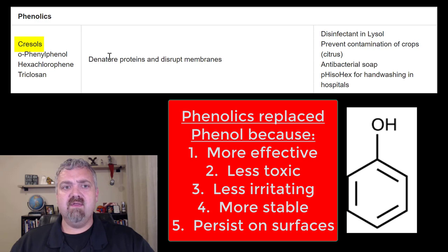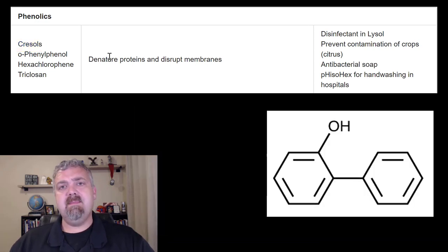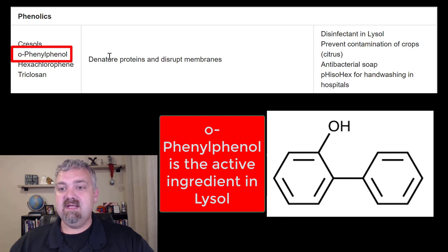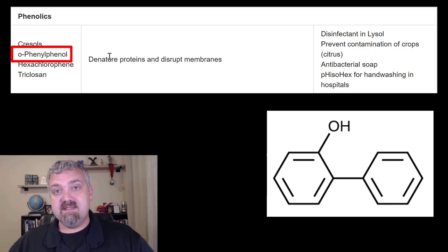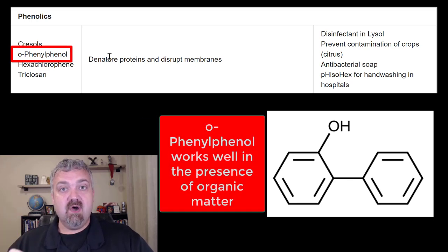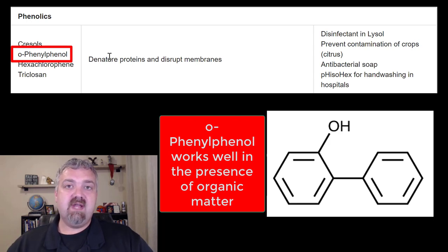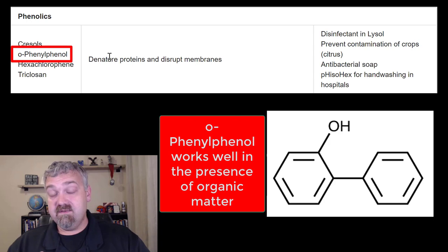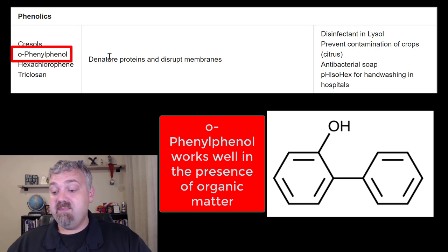Here we see an example of a phenolic: O-phenylphenol. You've heard of this one — it's in Lysol, which has been around since the late 1880s. One huge advantage of O-phenylphenol, or what you'd find in Lysol, is that it works in the presence of organic matter — think blood, vomit, fecal material, whatever. If you're dealing with organic matter, Lysol is a very good way to go because these phenolics work in the presence of organic matter. That's a key point.